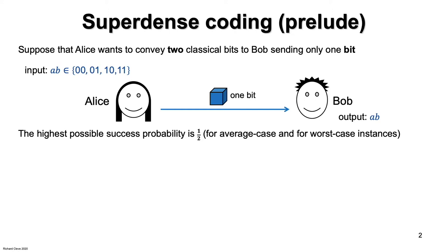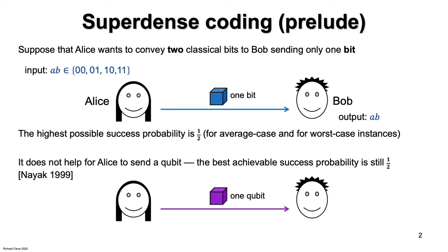What if Alice can send a qubit instead? It turns out that this still does not help. The best success probability is still one-half, which is a consequence of a result of Nyack.